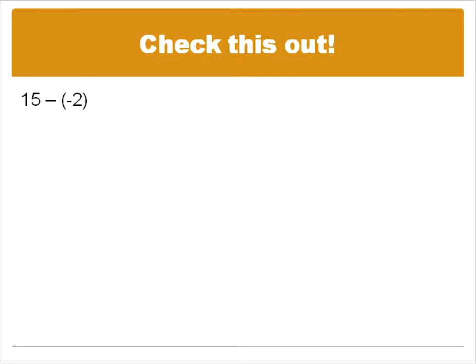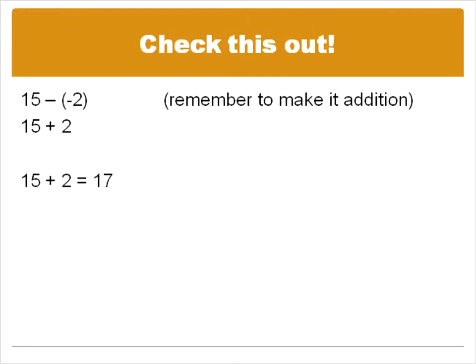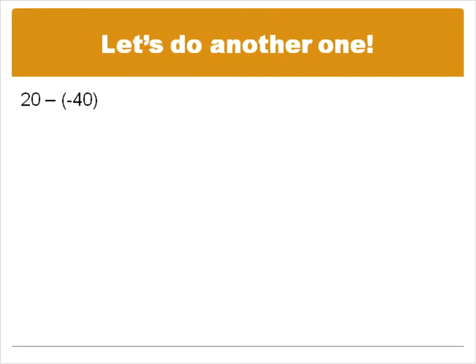So if you have something like this. Fifteen minus negative two. We're just going to change that into addition. Fifteen plus two. And fifteen plus two is equal to seventeen. A friend of mine likes to take this negative on the inside and kind of fly it over the top and pound it through to make it into a plus sign. And if that helps you to remember, great. That's what we're doing. Fifteen minus negative is the same thing as fifteen plus. So that's it.